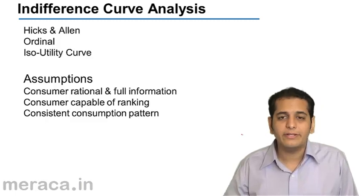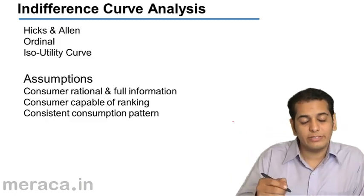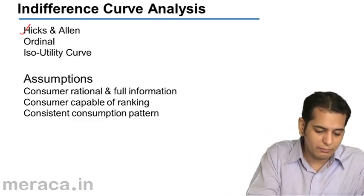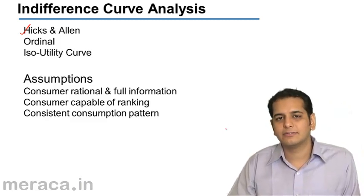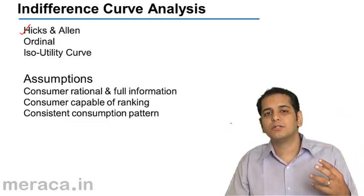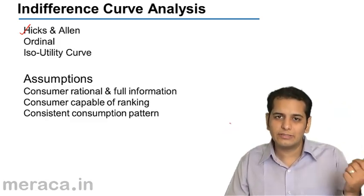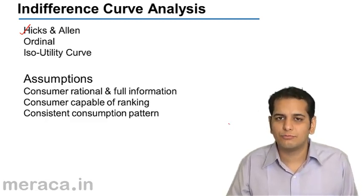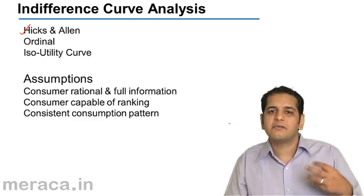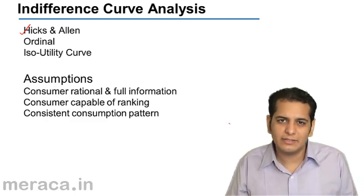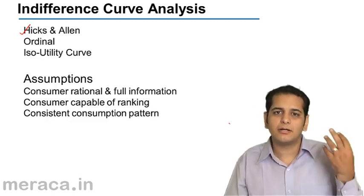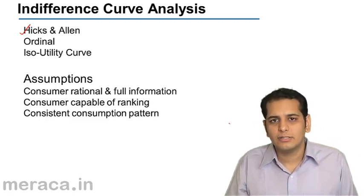Indifference curve theory, or the indifference curve analysis, was propounded by Hicks and Allen. These were the people who took the initiative from Alfred Marshall forward. Alfred Marshall came out with the marginal utility analysis, and Hicks and Allen built it up by coming out with indifference curves.